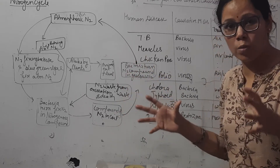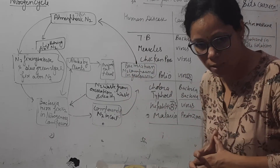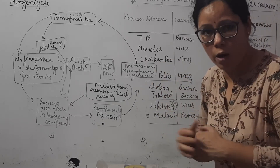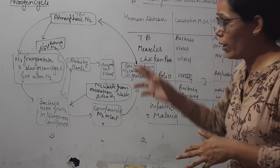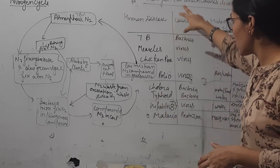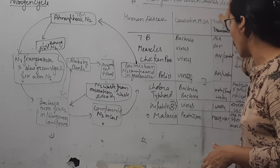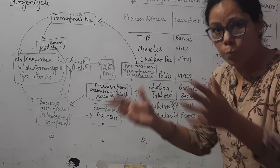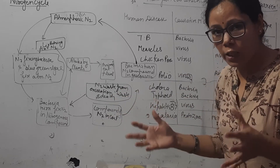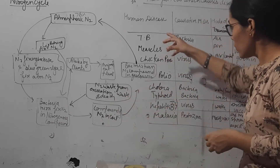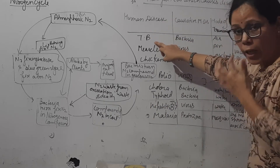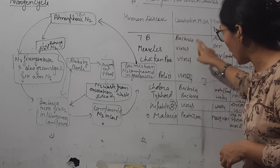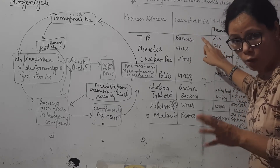Next we will discuss different microorganisms which cause disease — these are called pathogens. These microorganisms are carried by different carriers. We will discuss harmful microorganisms, the diseases they cause, and how they spread. The first disease is tuberculosis (TB), caused by bacteria spread through the air.